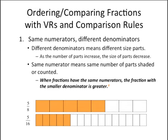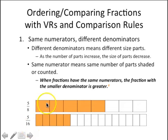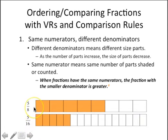Here's the first possible type of comparison: same numerators, different denominators. Different denominators means different-size parts — as the number of parts increases, the size of parts decreases. We're comparing five-eighths to five-sixteenths. This bar is split into eight equal-size parts for the denominator of eight, and this bar is split into 16 equal-size parts for the denominator of 16. We can see that the eighths are larger than the sixteenths.